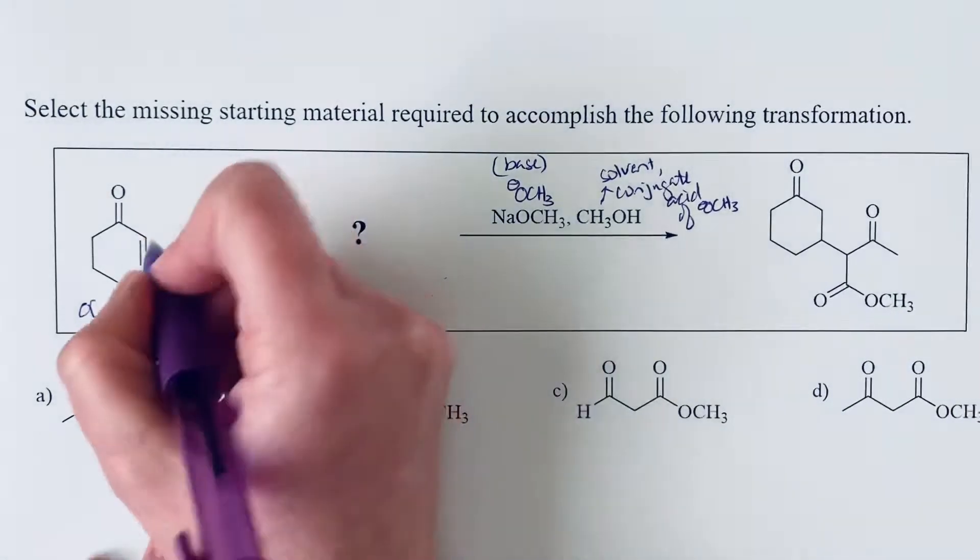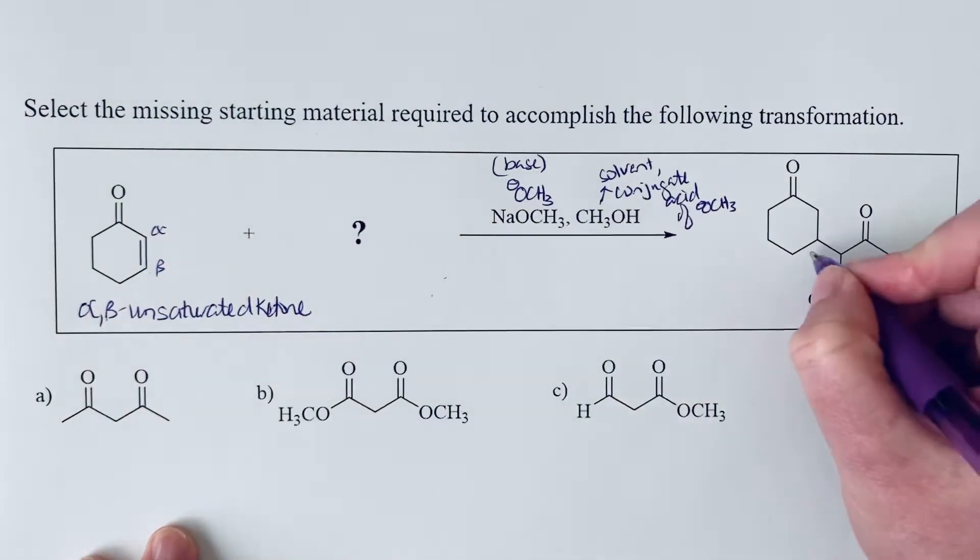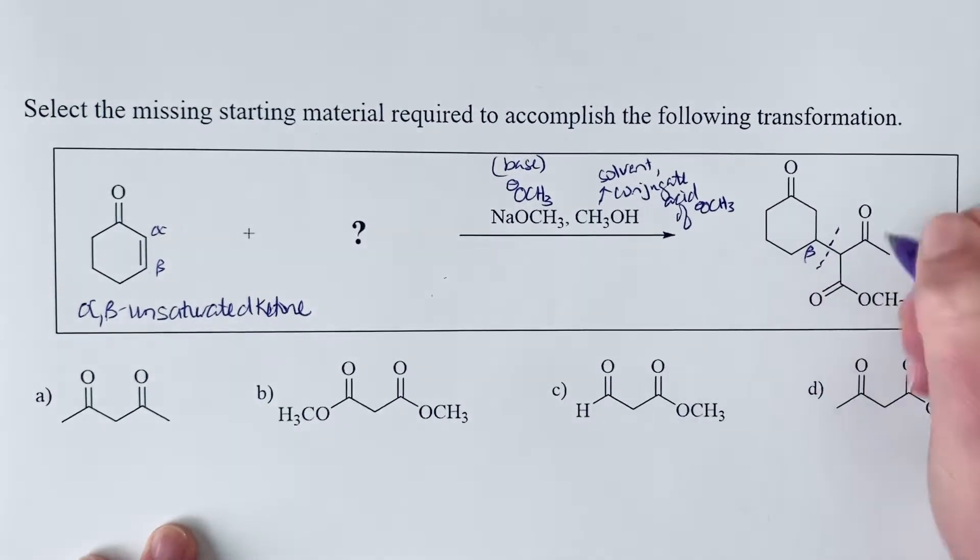And so what we should notice, let me draw the alpha and beta on here, is that we have substituted at the beta carbon. So we've got a new bond right here.